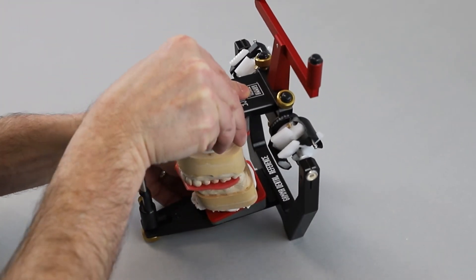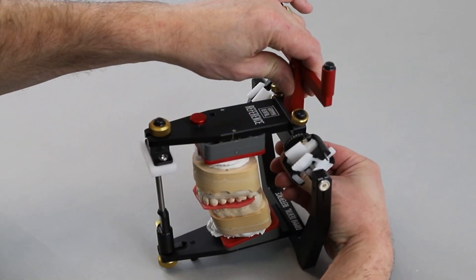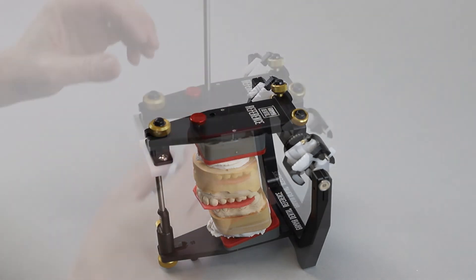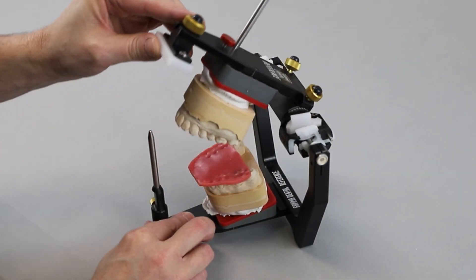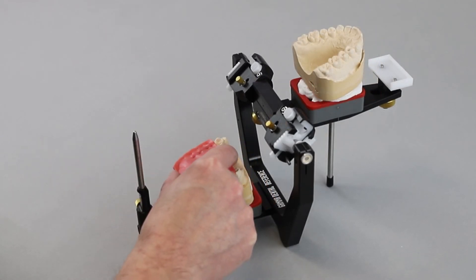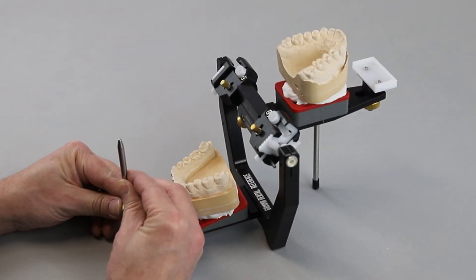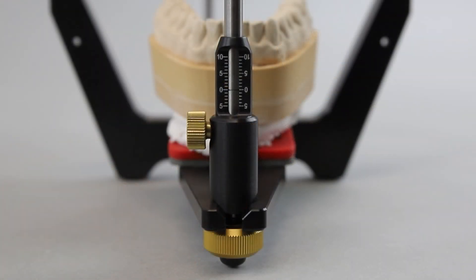Remove the mandible mounting clamp. Open the articulator and remove the bite registration. Set the incisal pin to zero and close the articulator.